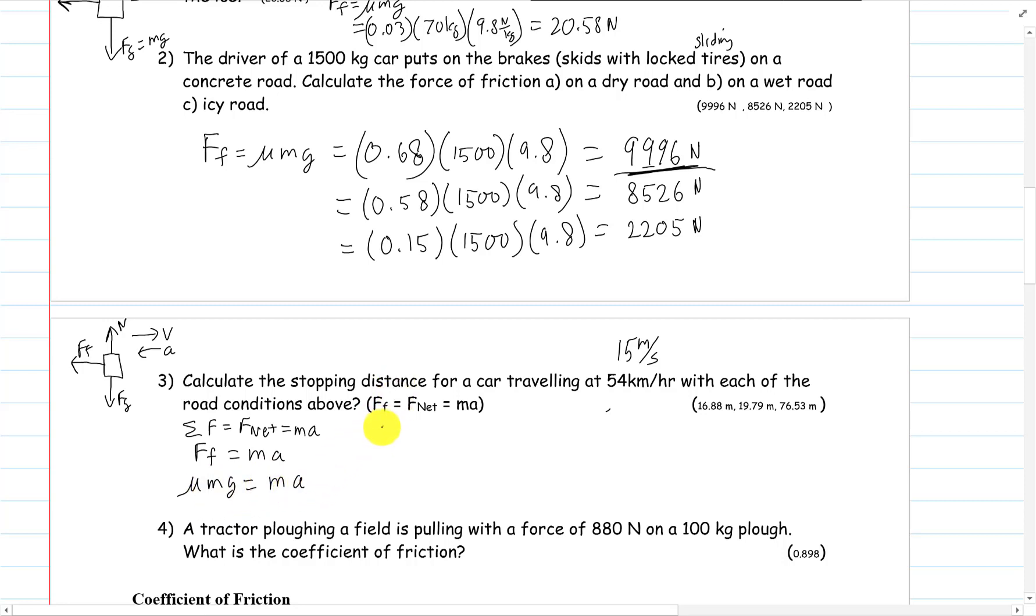So it's 9996 equals 1500 kilograms times a, and then 8626, then 2205 equals 1500 kilograms times a. That's just this number which is what we have up here, equals ma. Calculating the accelerations for each of these, and then once you have the accelerations...